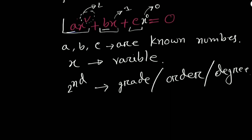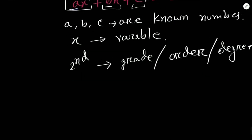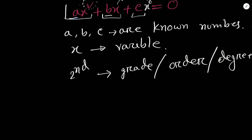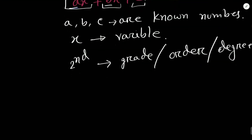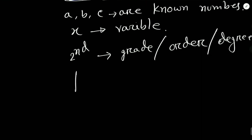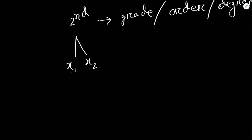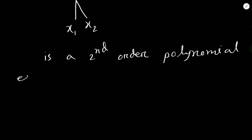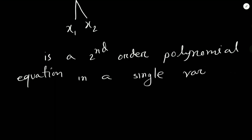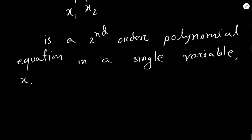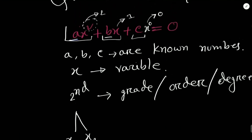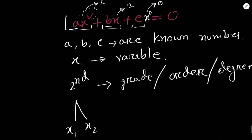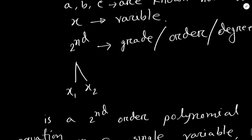We learned in my previous tutorial that the number of solutions of an equation equals its order. Since this is a second-grade equation, we will have two values of x: x1 and x2. So a quadratic equation is a second-degree polynomial equation in a single variable x. The properties are: a, b, c are constants, x is the variable, it is second-grade, and it has two solutions.